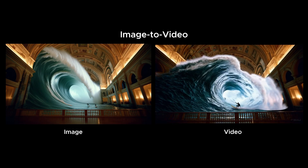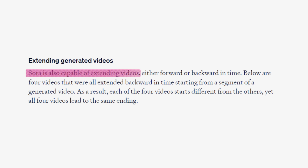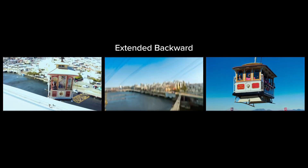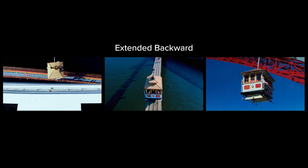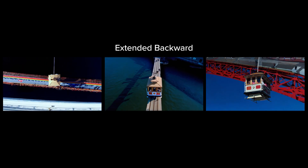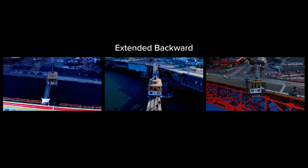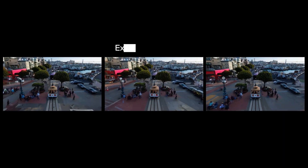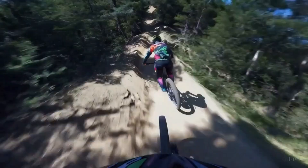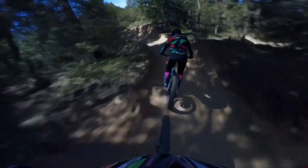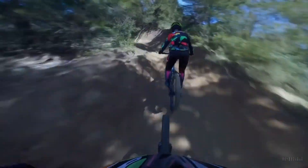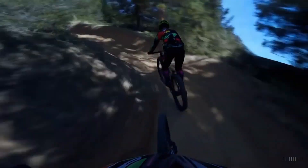Another thing that Sora can do is extend already generated videos. In this example, the video is extended backward, which means these videos start off differently, but the video will end on the same scene. This feature can also be used to create some kind of infinite loop — as shown here, the biker seems to move endlessly through the course in a slightly curved pathway.